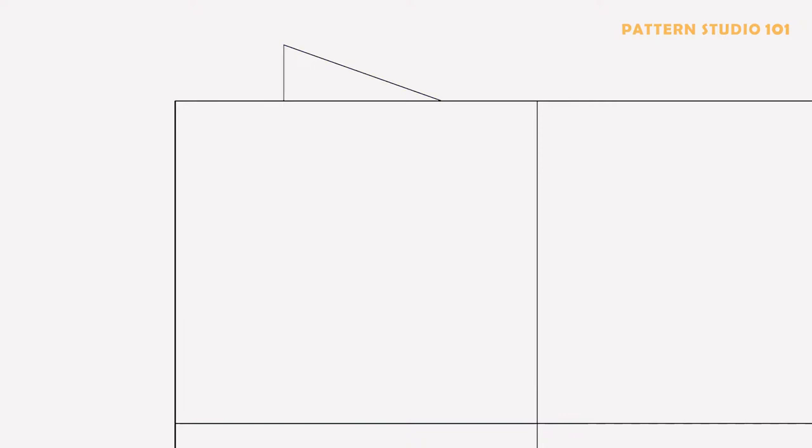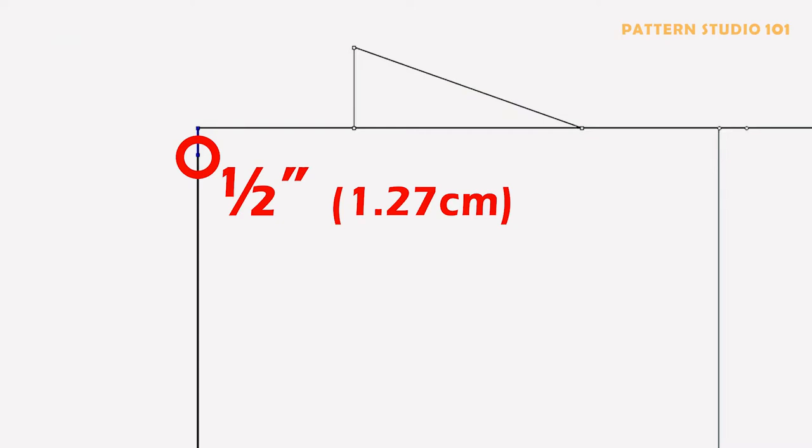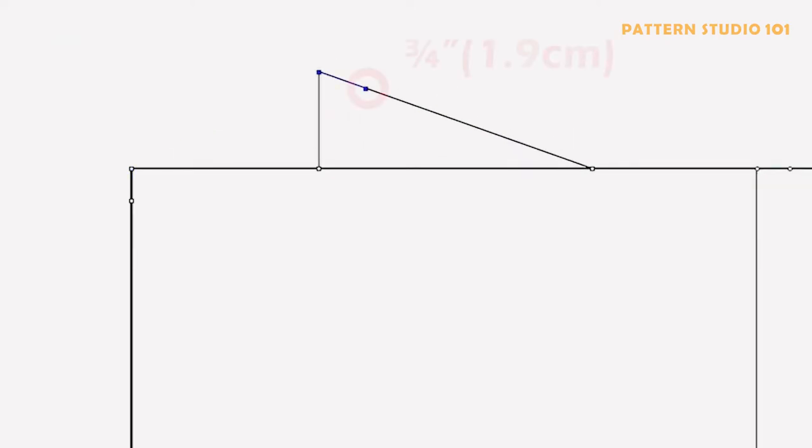Because this fabric is thick and it is kind of a winter jacket, so I'm going to draw the neckline wider and deeper. So go down half of an inch at the center back. Take out 3 quarters of an inch at the side neck and draw a neckline.